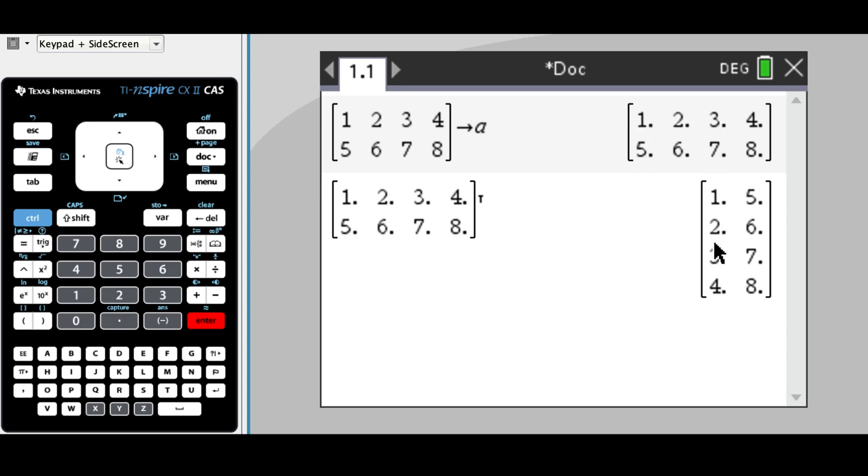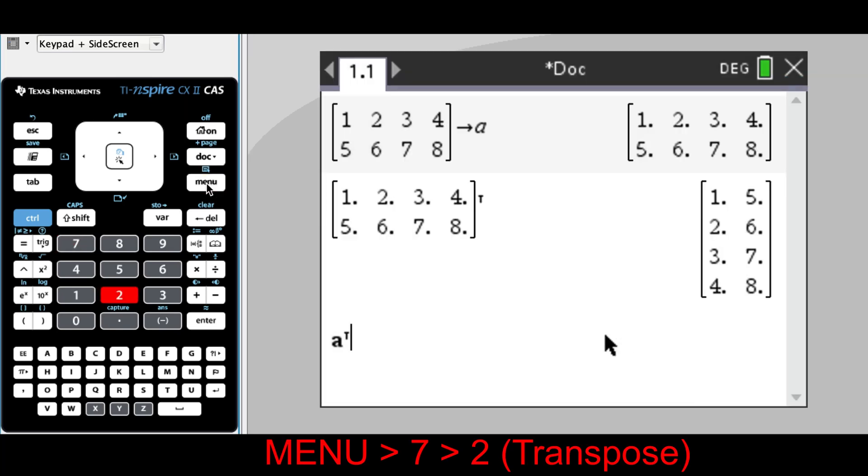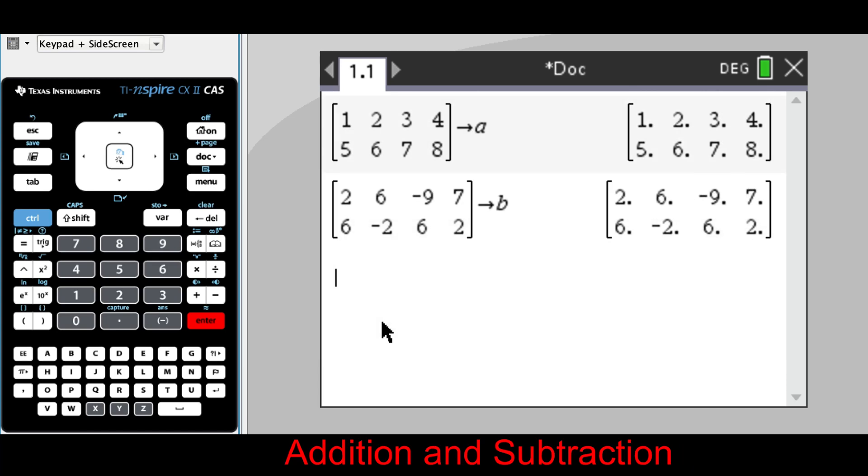If we have stored multiple matrices, we can also just type in the letter matrix a, go into menu 7-2, and transpose it again that way.